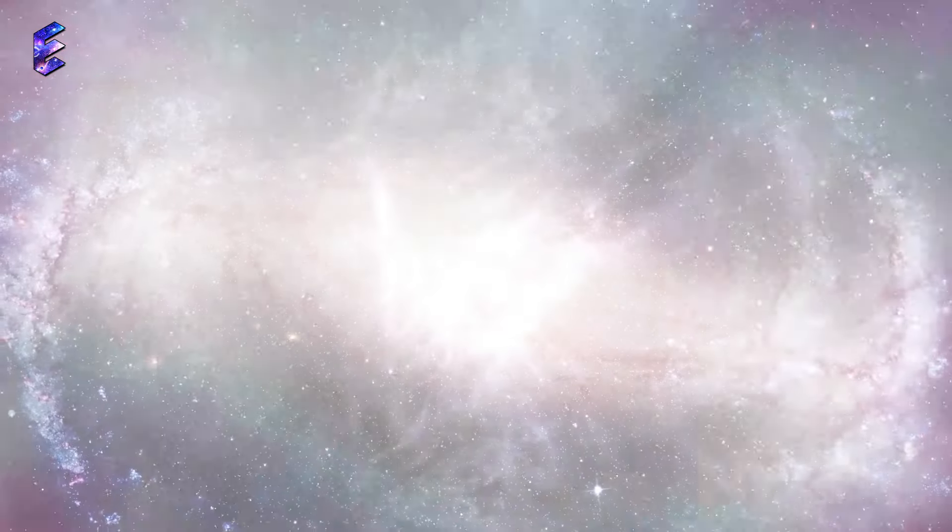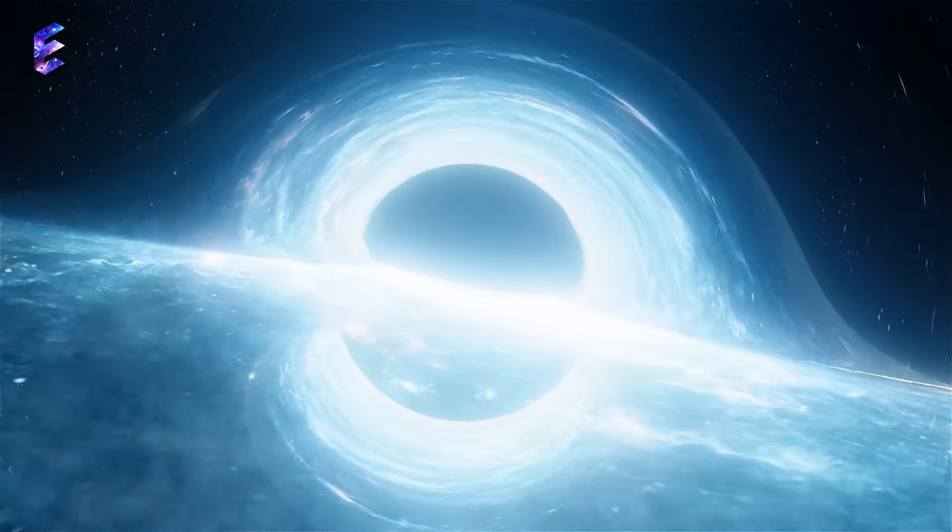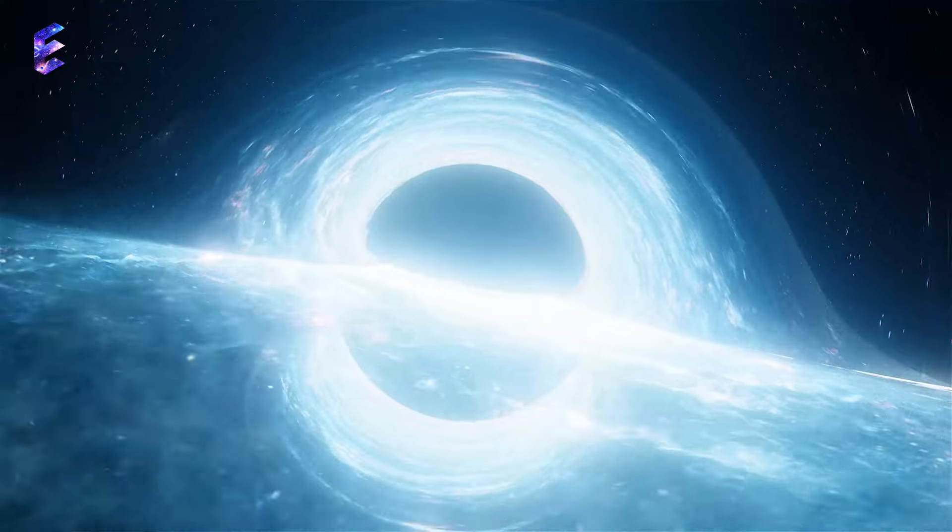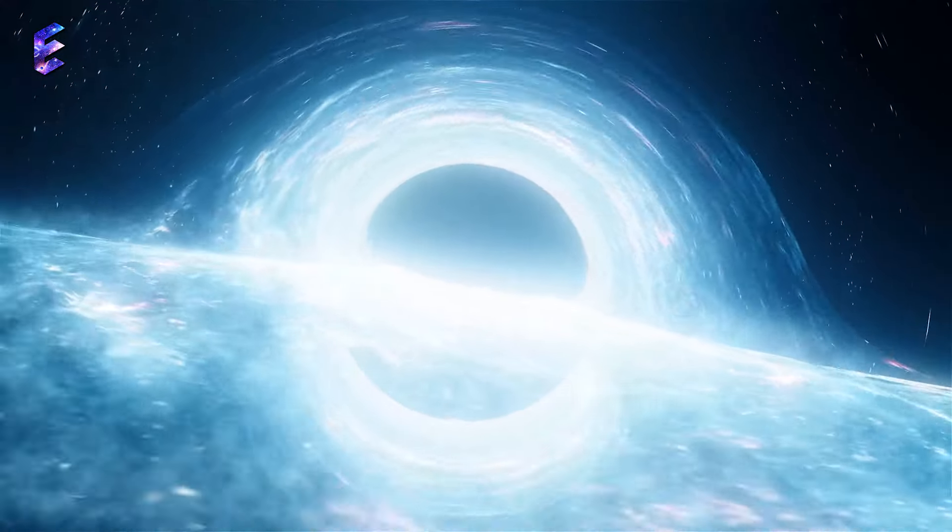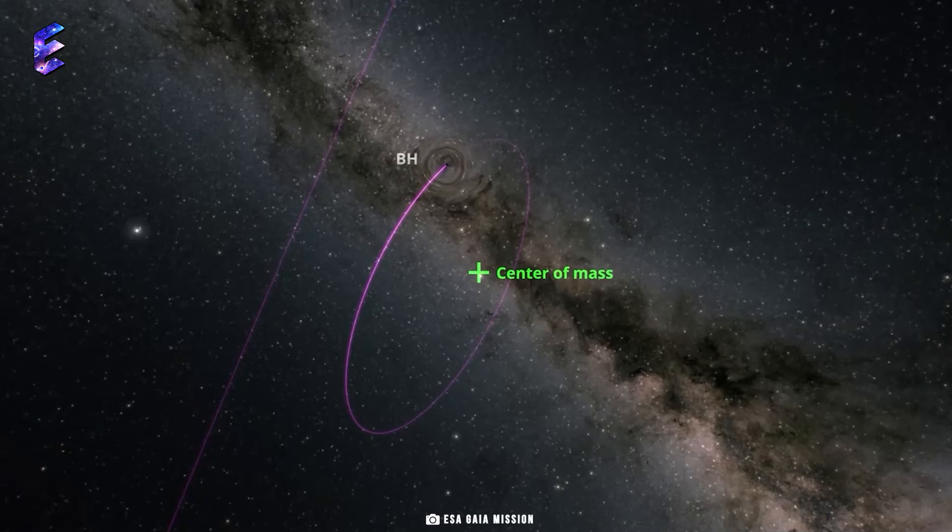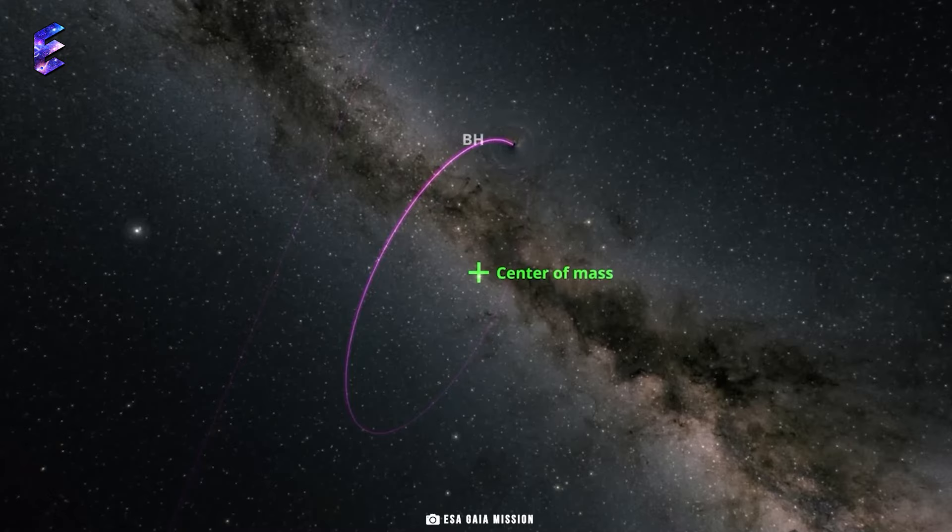is a stellar mass black hole. A stellar mass black hole forms when a large star runs out of fuel and collapses. It has a mass 33 times the mass of the sun. That makes it the most massive stellar mass black hole found in our galaxy.